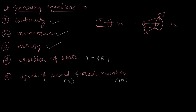Now let us look at these two figures, figure A and figure B. In figure A, the area A in the x-direction throughout the duct is constant. So the properties such as pressure, density, and temperature will all be functions of x only.